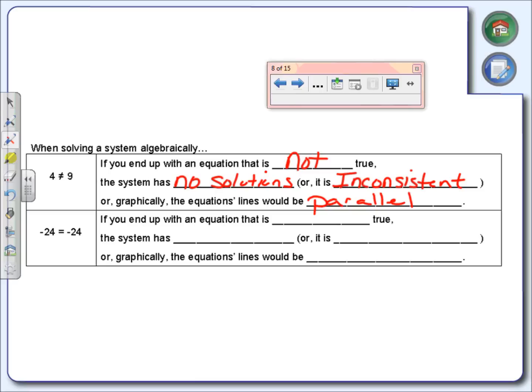The other example we had was what if it is true? Well, if you end up with an equation that is always true, such as this case right here, negative 24 equals negative 24, then the system has an infinite number of solutions. Or it is, what do we call it when it's an infinite number of solutions? We call it consistent. Or graphically, the equation lines would be coinciding.